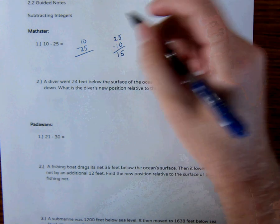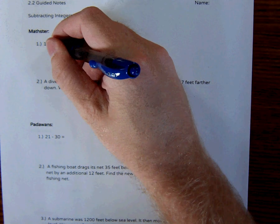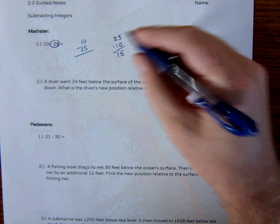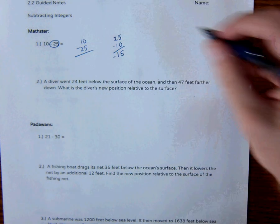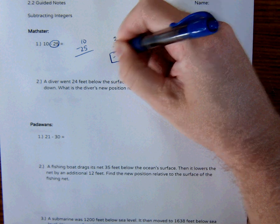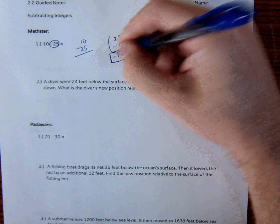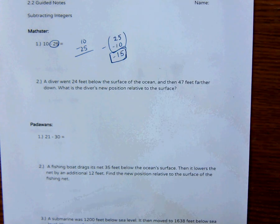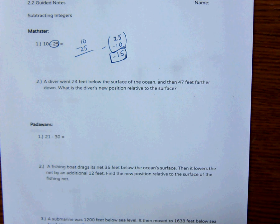But recognize that the negative number was actually the larger of the two, so make sure that my final answer is negative. Maybe think of it as 25 minus 10 and then a minus on the outside. And if I do that, negative 15 makes sense.